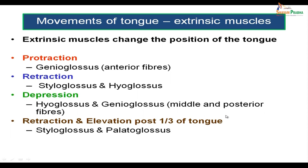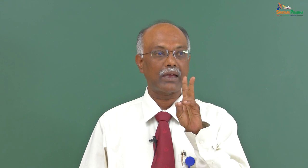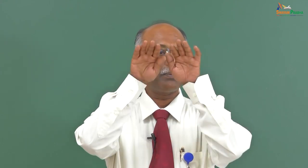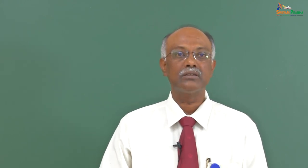The extrinsic muscles change the position of the tongue. Protraction — pulling the tongue forwards — is brought about by the anterior fibers of genioglossus. Retraction — pulling the tongue backwards — is caused by styloglossus and hyoglossus. Depression of the tongue is brought about by hyoglossus and the middle and posterior fibers of genioglossus. Retraction and elevation of the posterior one-third is caused by styloglossus and palatoglossus. Note that the anterior fibers of genioglossus cause protraction, while the middle and posterior fibers cause depression.